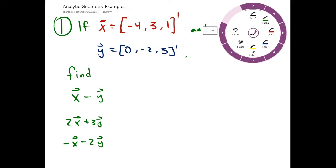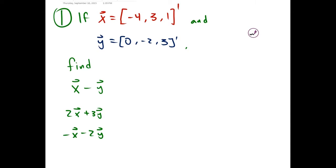So we have x equaling (-4, 3, 1) and y equaling (0, -2, 3). First, we're asked to find x minus y.